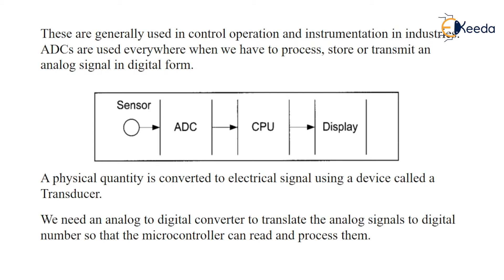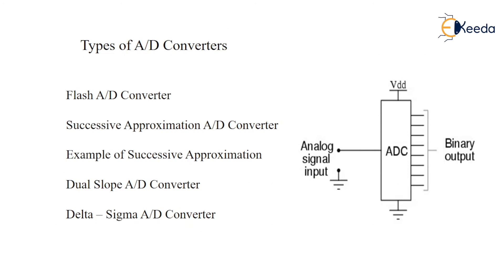Regarding types of ADC — in our digital electronics subject we have already studied these converters: flash ADC converters, successive approximation converters (abbreviated as SAR), dual slope, and delta-sigma converters. We are not going to go deep into this topic.